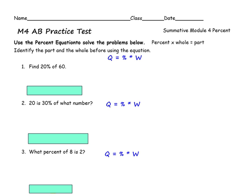Number 1: find 20% of 60. We start with the original equation: quantity equals percent times whole. Identify the important parts — 20% is the given percent, and 60 is the whole; we are finding the quantity. So we substitute 0.2 for the percent and 60 for the whole, and we solve to find the part. The answer is 12.